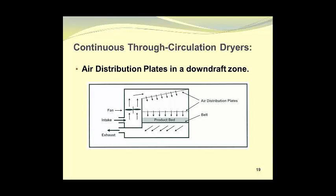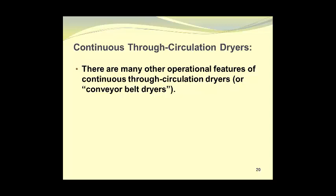In a downdraft zone, the same reasoning applies. However, the air distribution plate is placed above the product, so once again there is a back pressure that creates a nozzle effect for each one of the holes in the air distribution plate. In this diagram, I've actually shown two air distribution plates to even out the air flow even more than when using a single distribution plate. There are many other operational features of continuous through-circulation dryers, or conveyor belt dryers as they are often called, but we will not go into them here.